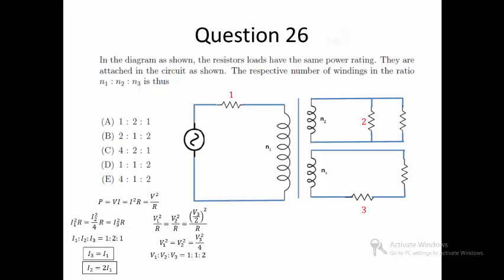With this, we can know that V3 is 2V2, and since both circuits 2 and 3 are secondary, by knowing that number of windings is proportional to voltage, we can deduce N3 equals 2N2. To include N1, we need to make use of the conservation of energy.